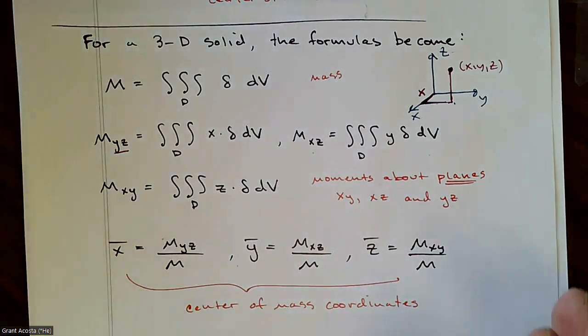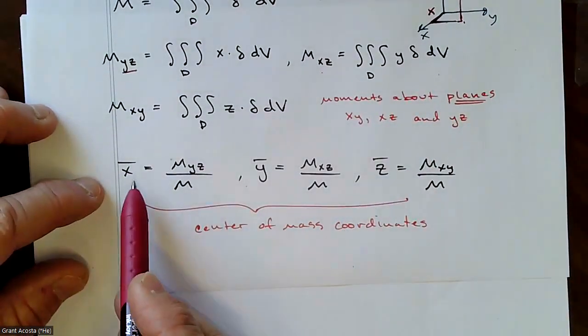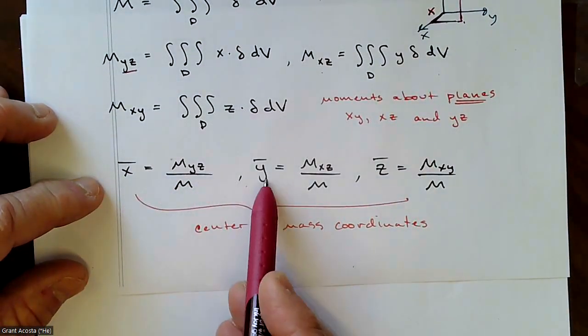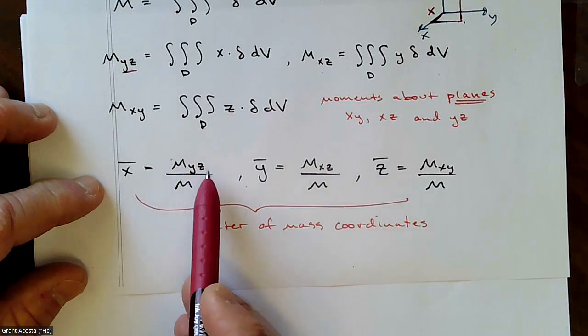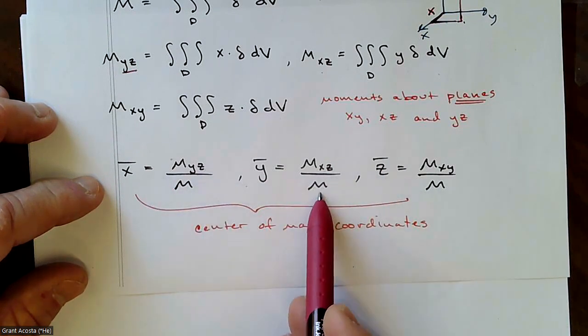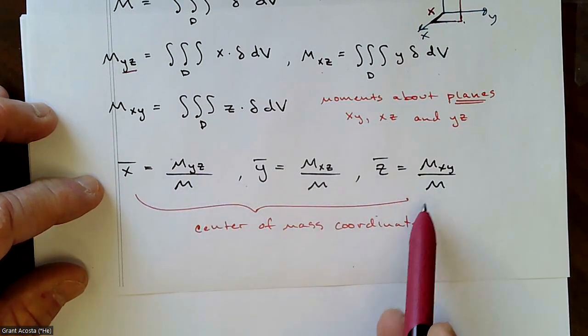Similarly, if you want the moment about the x-z plane, the distance from any point to the x-z plane is going to be y, and same thing for the moment about the x-y plane, that distance is z. So these are moments about the planes, and then once you have those for a three-dimensional solid, your x-bar, y-bar, and z-bar can be found by dividing these respective moments, each of them by the mass of the object.